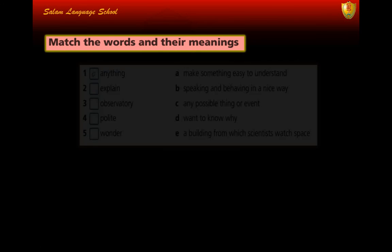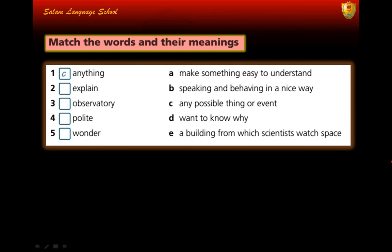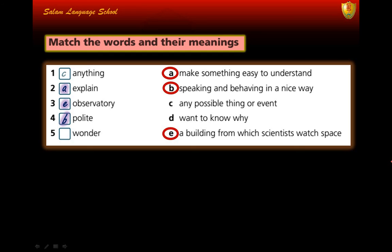Now match the words and their meanings. 'Anything' means any possible thing or event — letter C. 'Explain' means to make something easy to understand — letter A. 'Observatory' is a building from which scientists watch space — letter E. 'Polite' means speaking and behaving in a nice way — letter B. 'Wonder' means to want to know why.